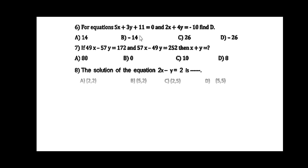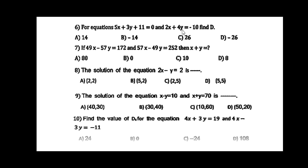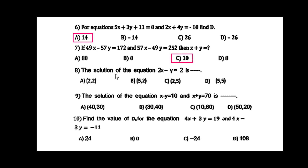For the equations 5x + 3y = 11 and 2x + 4y = -10, after solving, the value of D is 14. If 49x - 57y = 172 and 57x - 49y = 252, then x + y = ? You have to subtract the first from the second equation and you will get the direct value of x + y, which is 10.